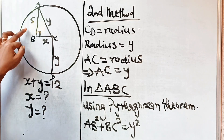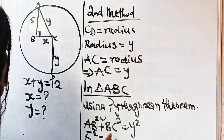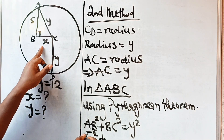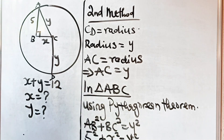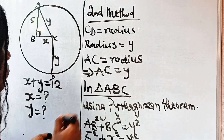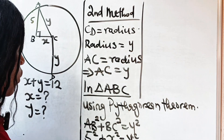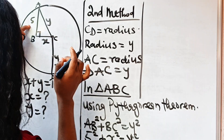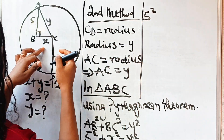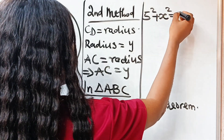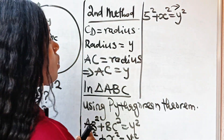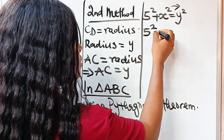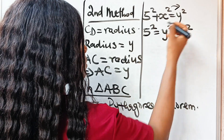AB is 5, and BC is x. So we have 5 squared plus x squared is equal to y squared. Using the Pythagorean theorem, that means 5 squared plus x squared is equal to y squared. Transferring to the other side, we have 5 squared is equal to y squared minus x squared.